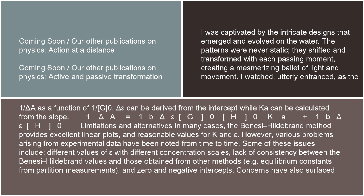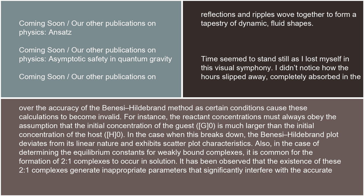Limitations: in many cases, the Benesi-Hildebrand method provides excellent linear plots and reasonable values for K and epsilon. However, various problems arising from experimental data have been noted from time to time. Some of these issues include different values of epsilon with different concentration scales, lack of consistency between the Benesi-Hildebrand values and those obtained from other methods, e.g. equilibrium constants from partition measurements, and zero and negative intercepts. Concerns have also surfaced over the accuracy of the Benesi-Hildebrand method, as certain conditions cause these calculations to become invalid. For instance, the reactant concentrations must always obey the assumption that G0 is much larger than H0. In the case when this breaks down, the Benesi-Hildebrand plot deviates from its linear nature and exhibits scatterplot characteristics.